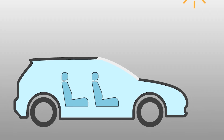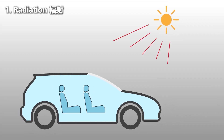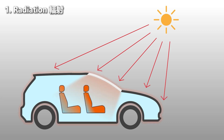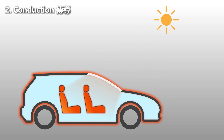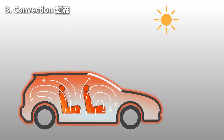The heat inside the car primarily results from three modes of heat transfer. First, radiation: when the sun's rays directly hit a parked car, light penetrates through the windshield and windows, causing surfaces of the vehicle to become hot due to radiant heat. Second, conduction: sunlight exposure leads to the heating of the car's metal shell and interior components, and this heat is conducted into the interior, causing an overall rise in temperature. Third, convection: the air inside the car gets heated, causing hot air to rise and cold air to descend, creating a continuous circulation that results in even temperature elevation.